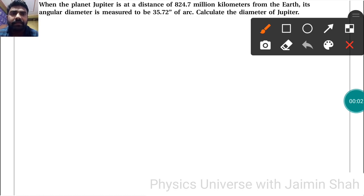The question is: when the planet Jupiter is at a distance, so here we have distance equal to 824.7 million, which is 824.7 × 10^6 kilometers from the Earth, its angular diameter...